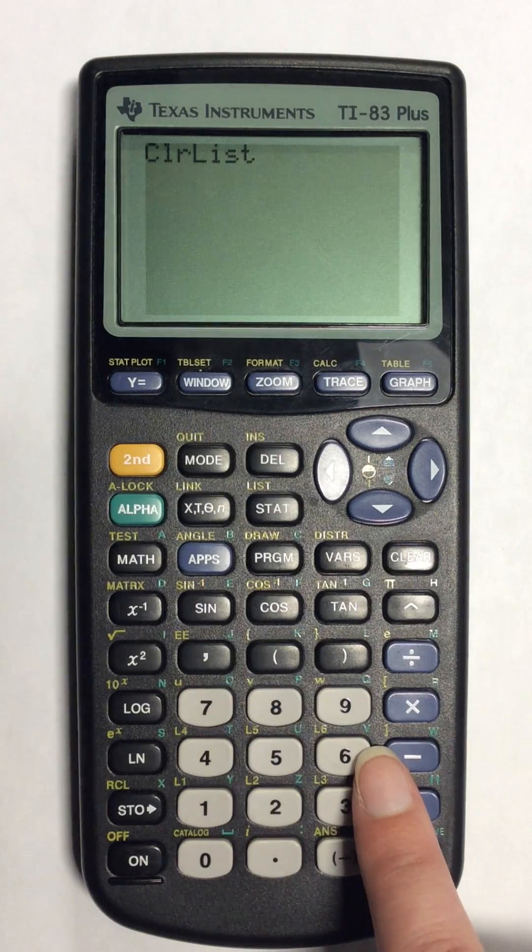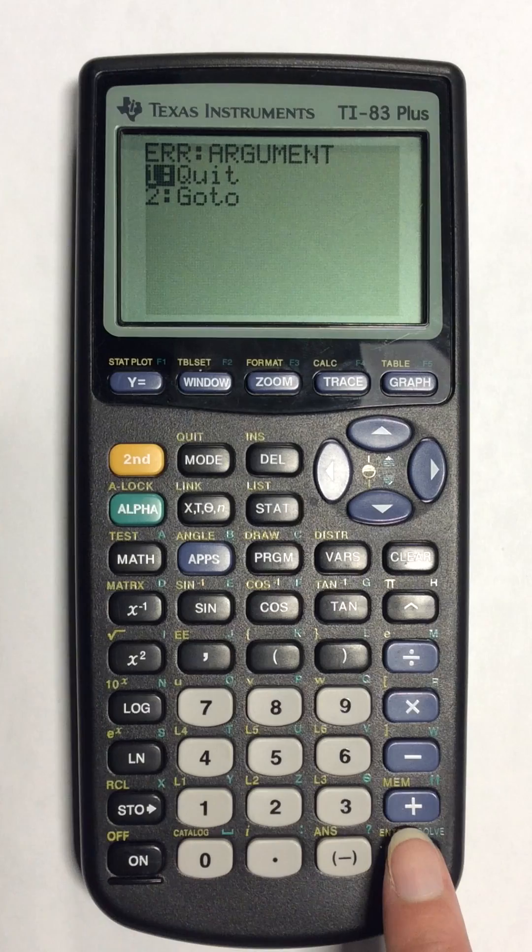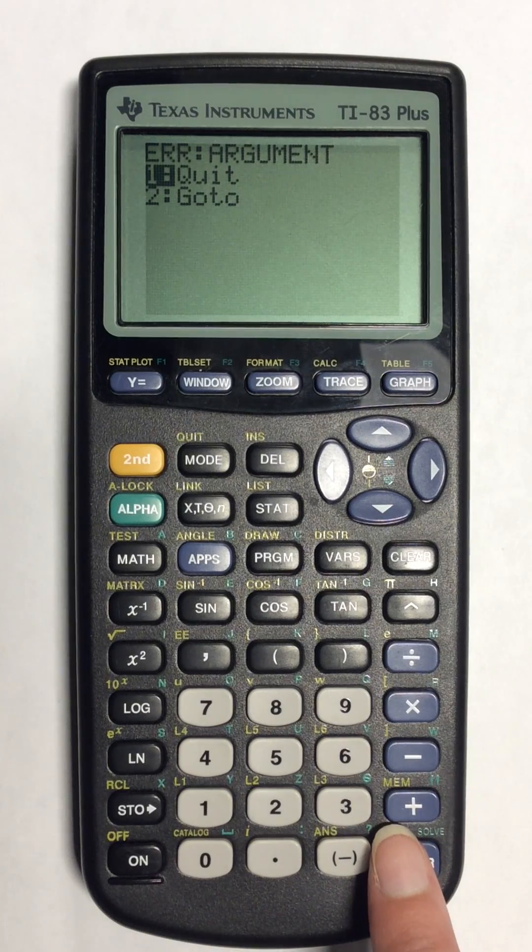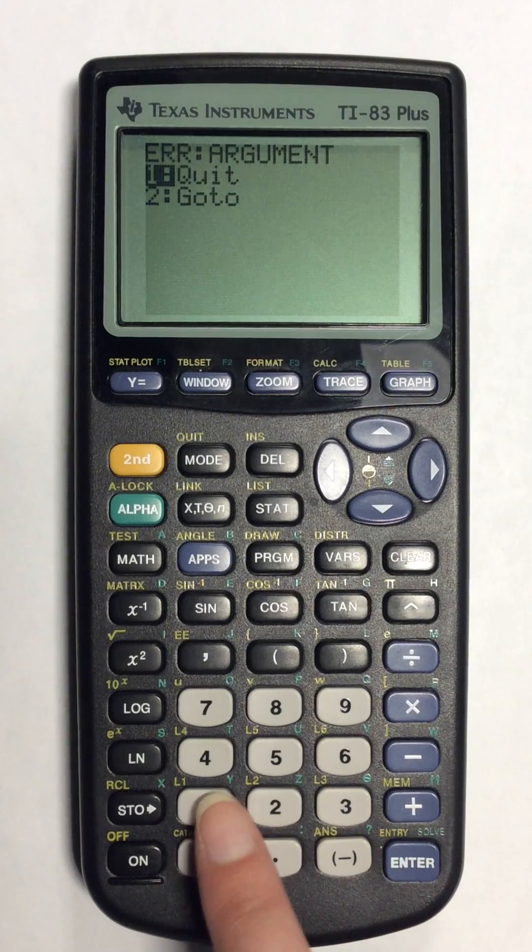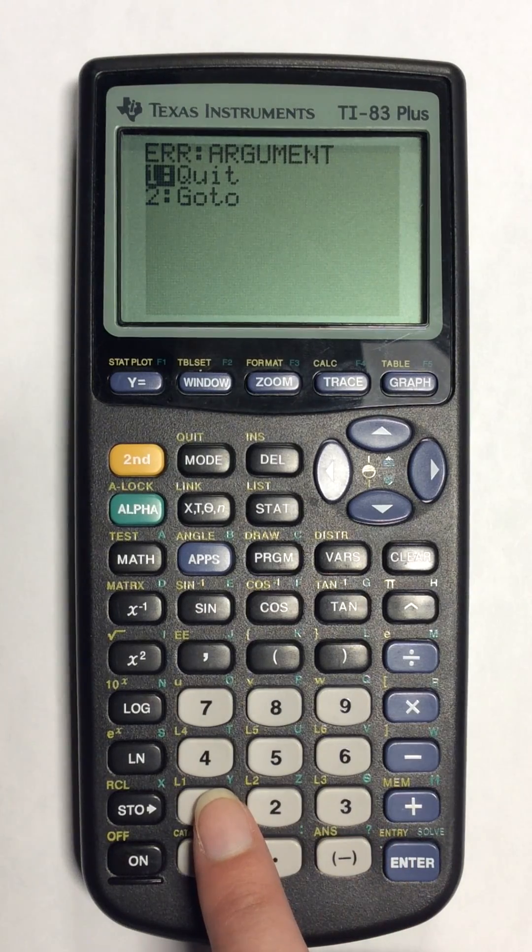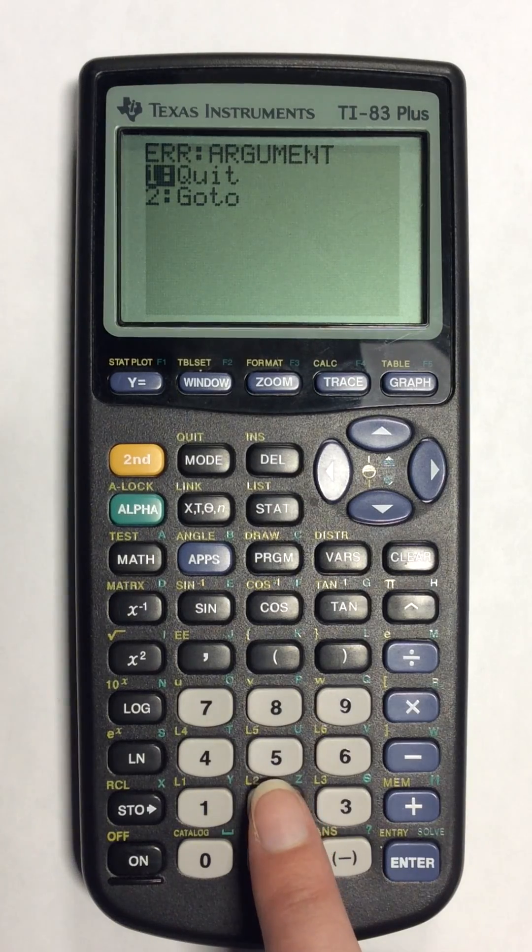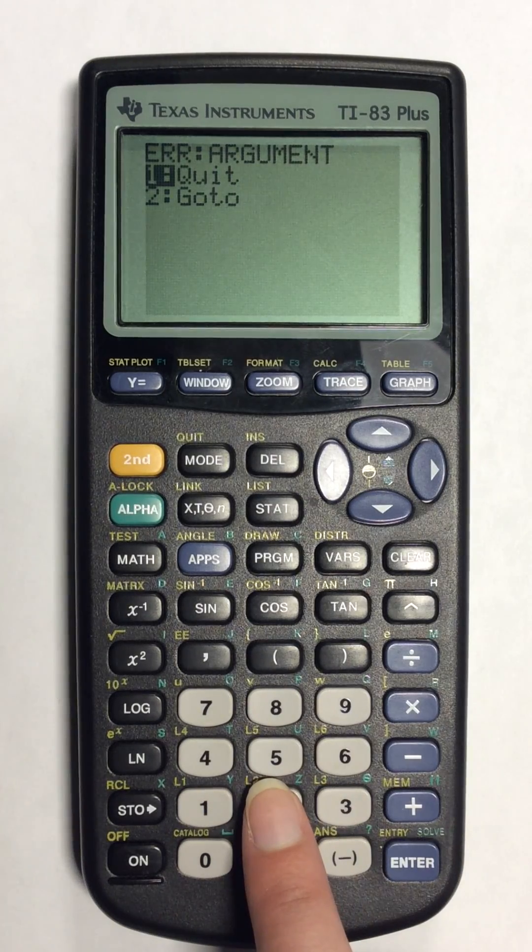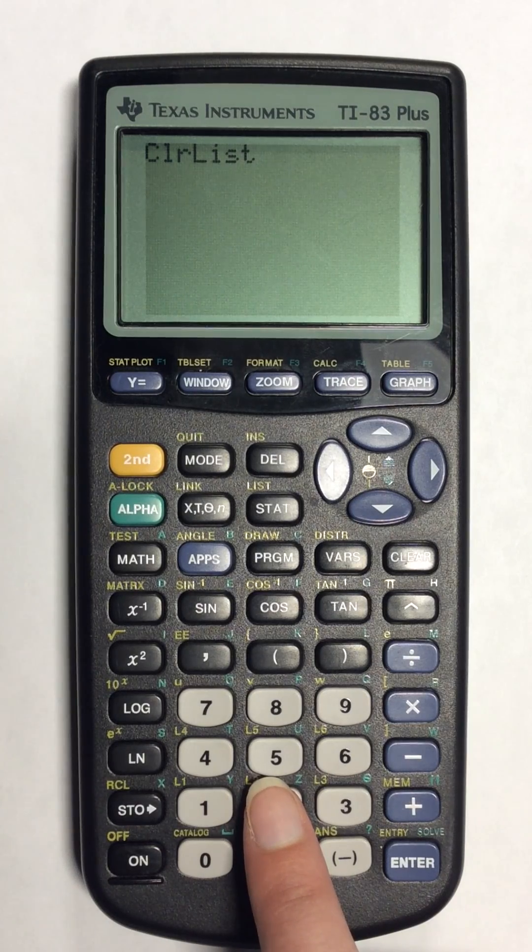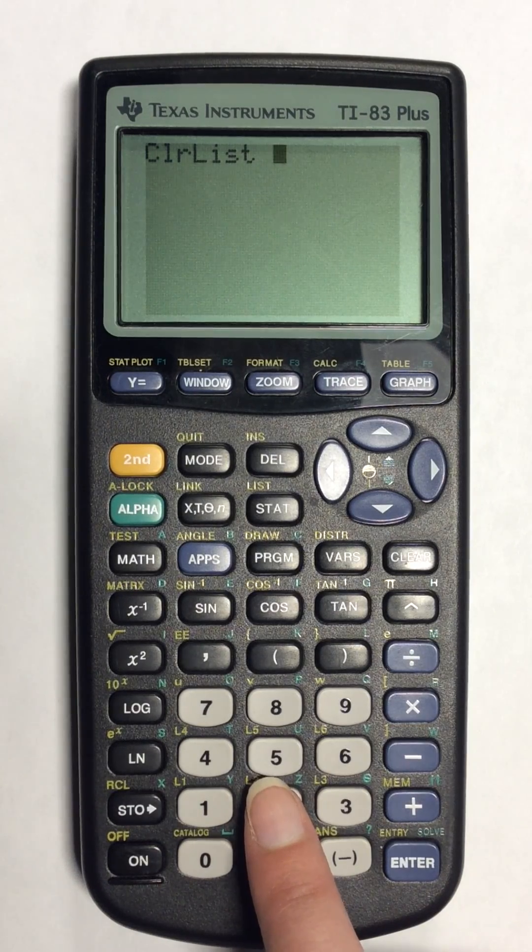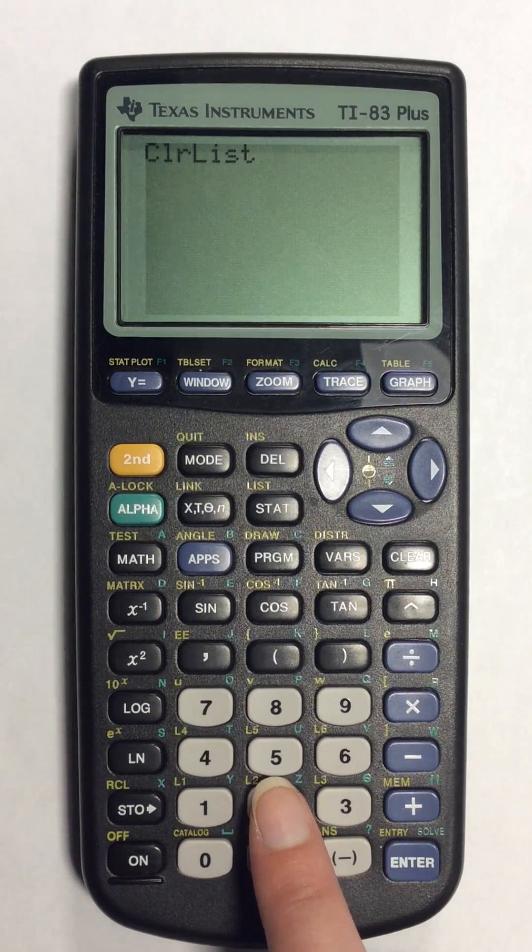But you can't just hit enter here. Because if I do, it will give you an error. It doesn't know what list you want to delete. So you can either hit quit, which will cancel out the clear list option, or you can hit go to. If I hit number 2, it will go back to what I was doing, which is the clear list option. But I need to tell it what list to clear.